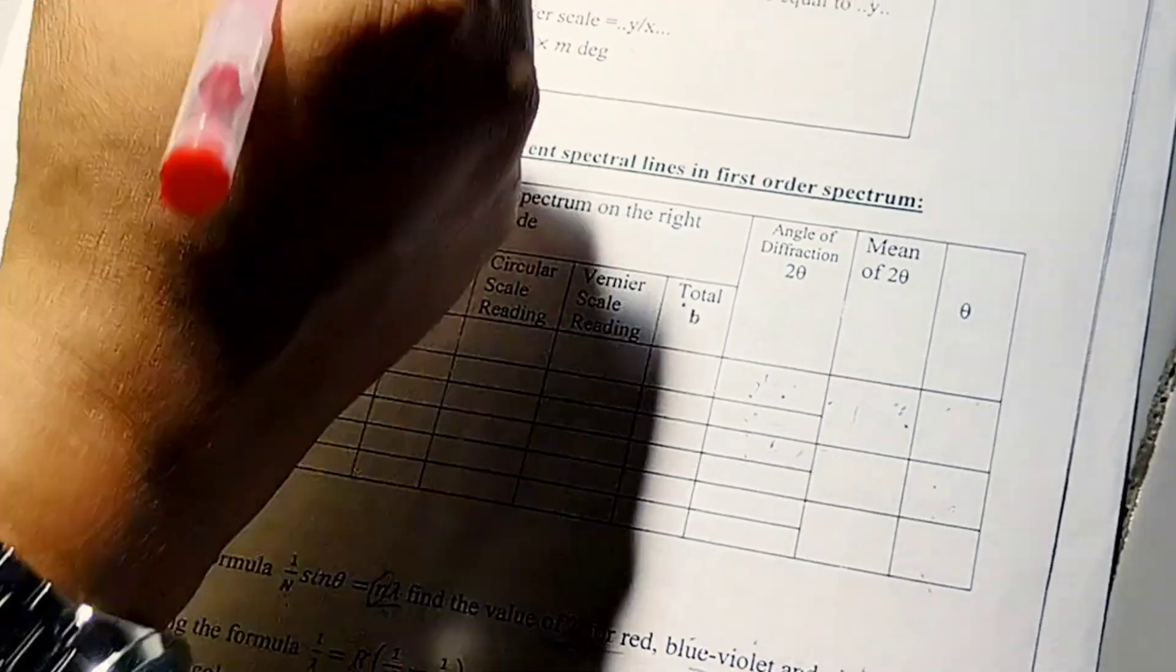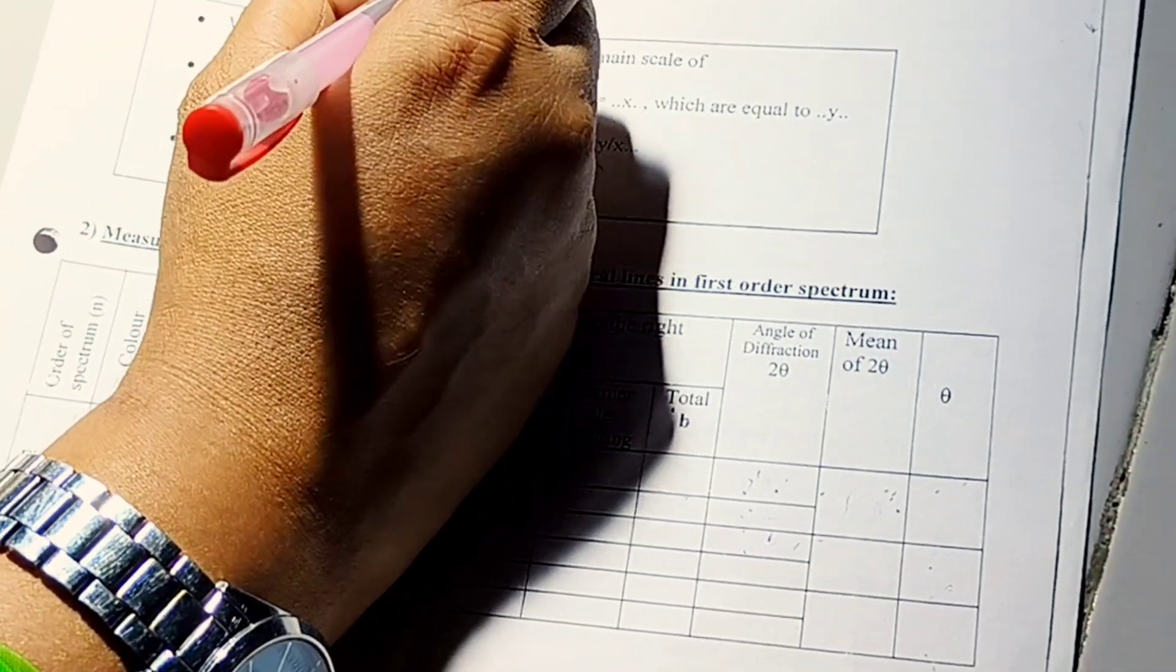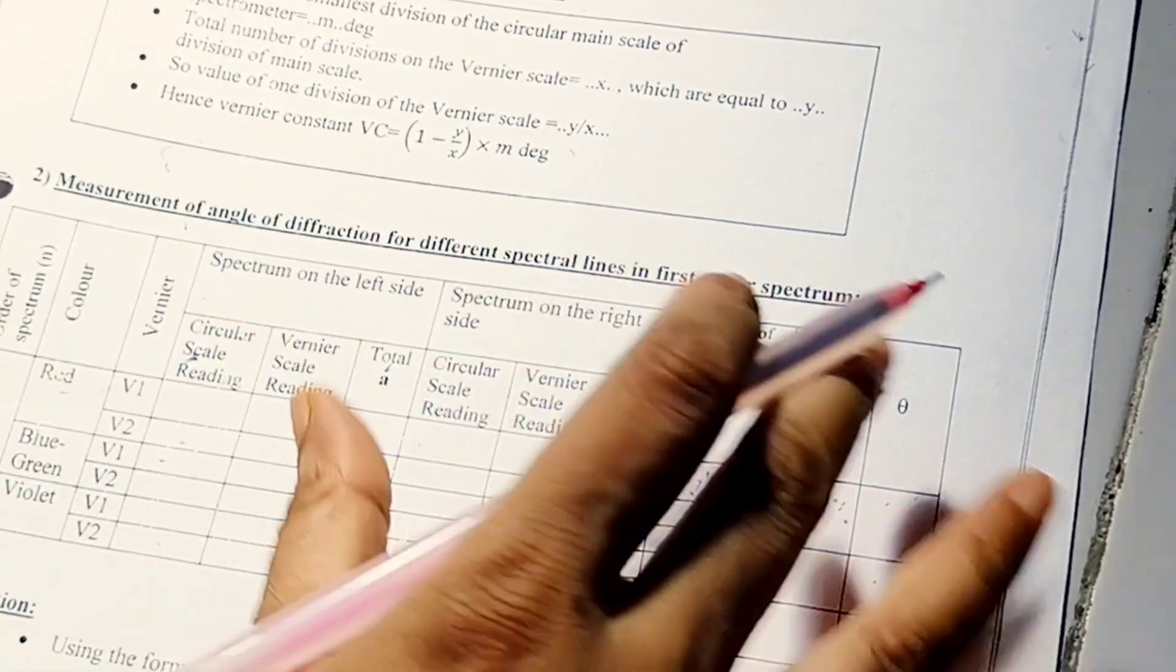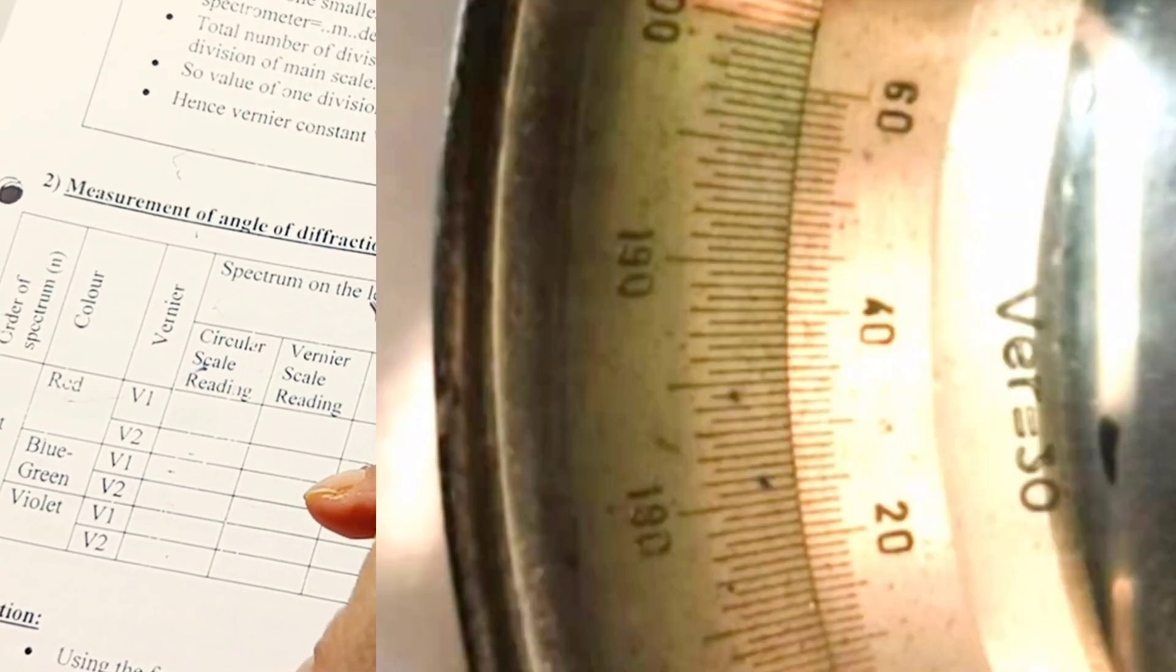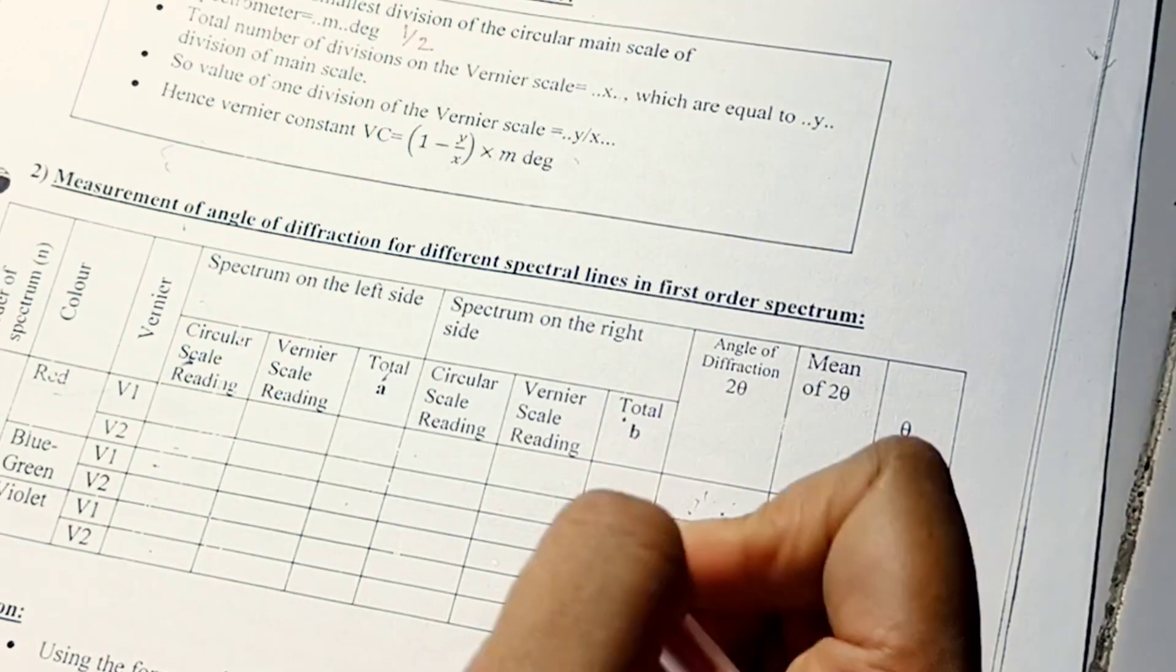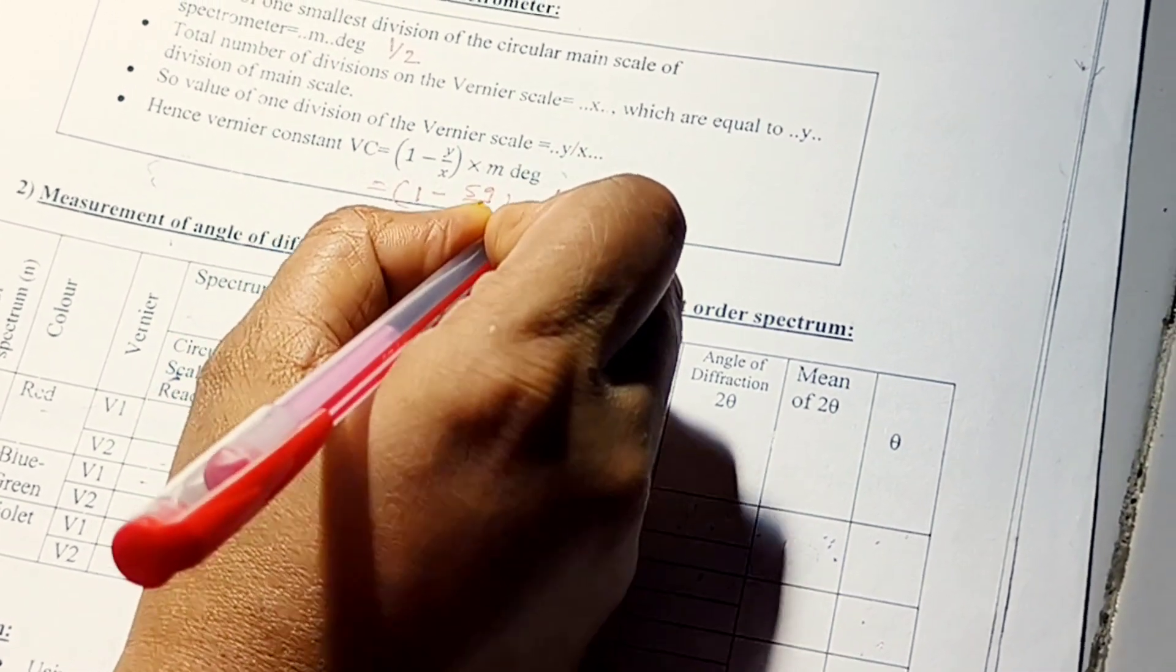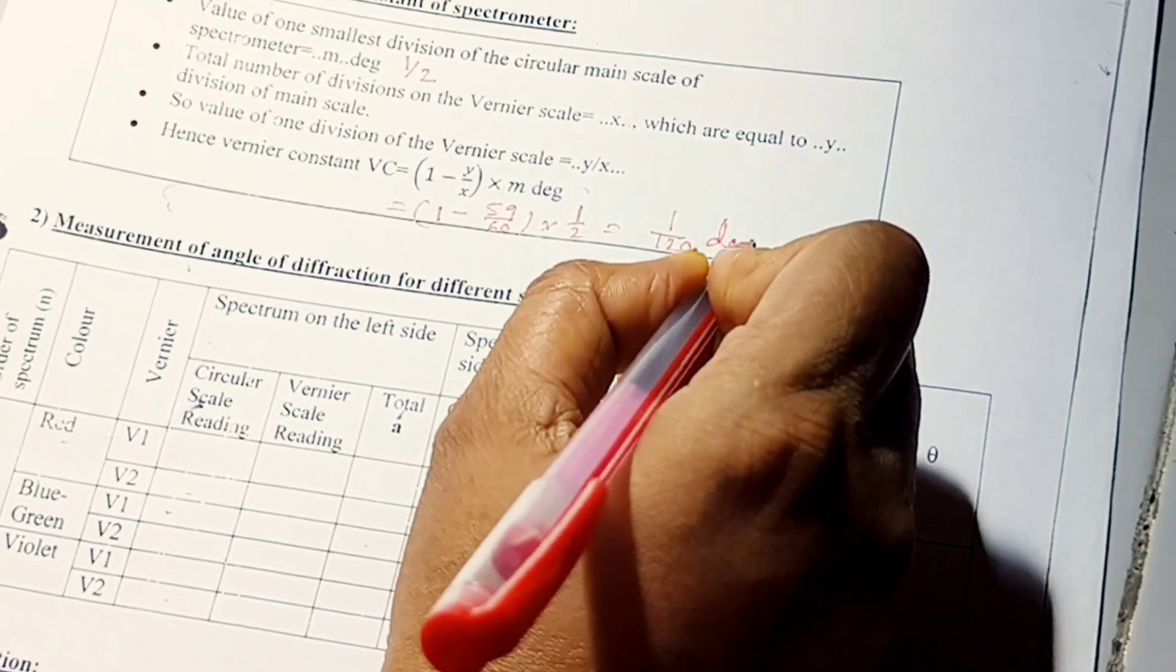So, at first I am going to write number of rulings of the grating, that is 300 lines per millimeter. Then value of vernier constant of spectrometer. Spectrometer's vernier constant is, there is one small division is half degree. So, vernier constant will be 1 minus 59 by 60 into half, that means 1 by 120 degree.